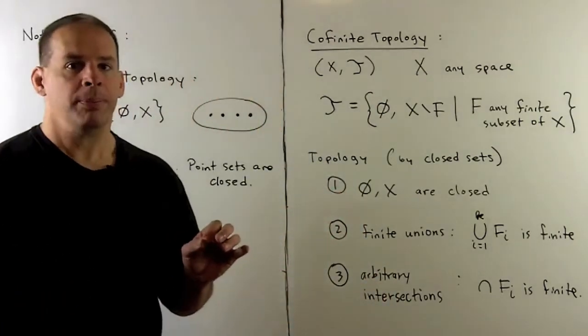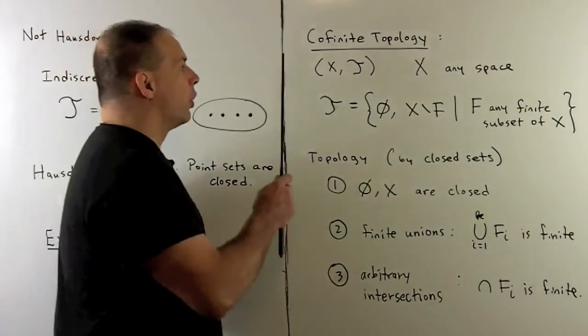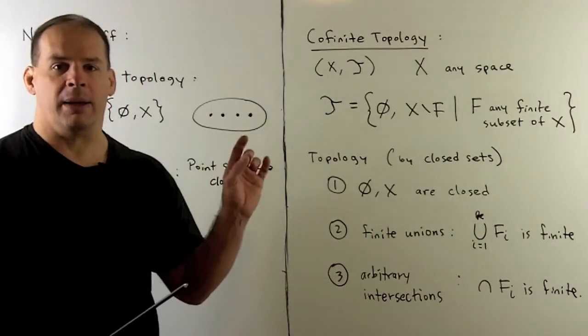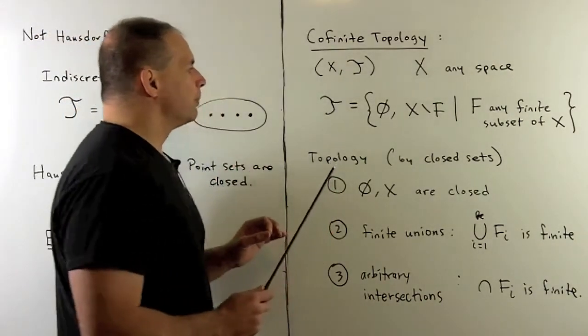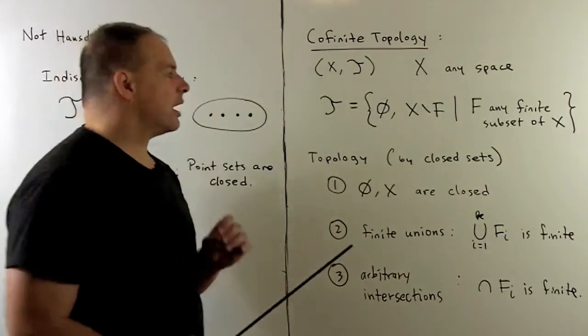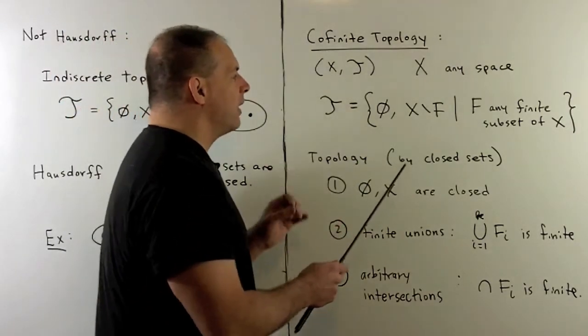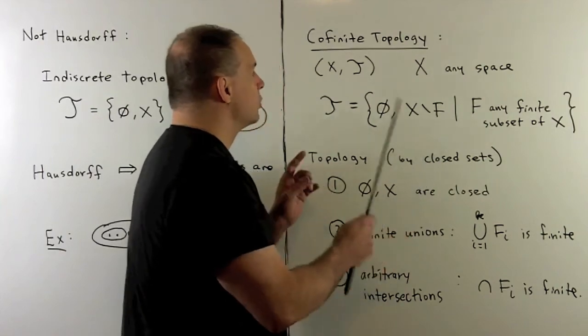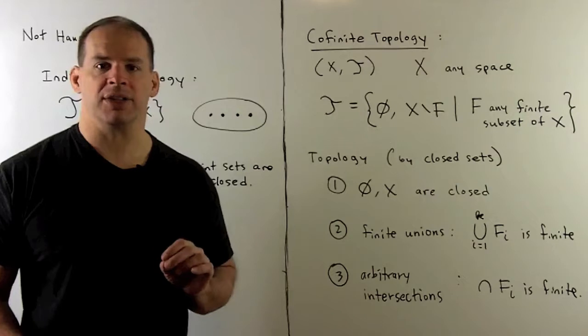For a natural example, we have the cofinite topology. We'll have X, any non-empty space. The topology that we're going to use, the open sets are going to consist of the empty set and the complements of our finite subsets. So cofinite: complements of finite sets.